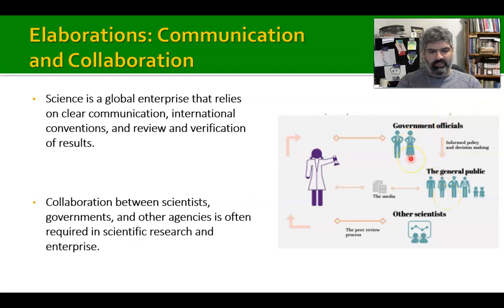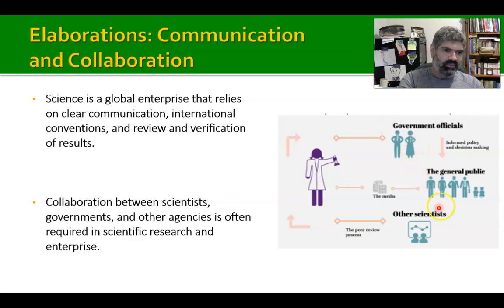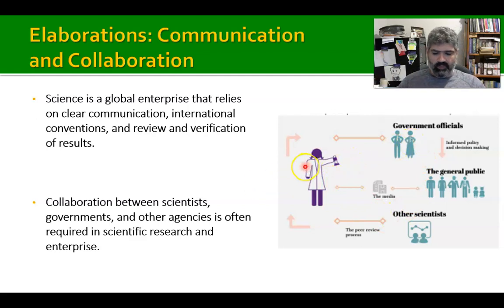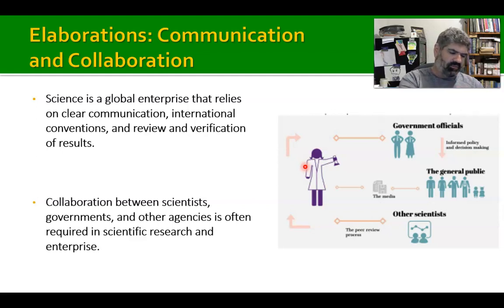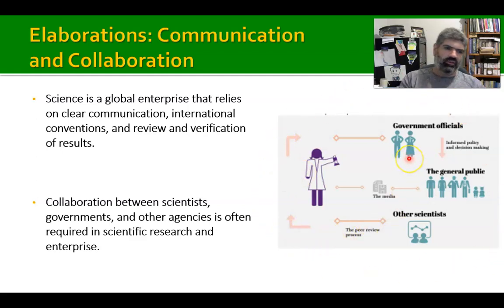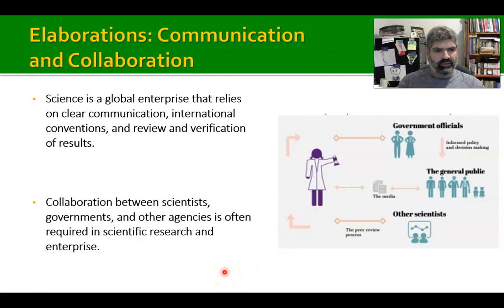The public, at voting time, influences the government, and the government influences the public. For example, a policymaker might come up with policies that influence the public, and the government might offer scientific grants for people who find vaccines. The influence flows all around, and if you're honing in on one of these interactions, it fits under the Communication and Collaboration bracket.